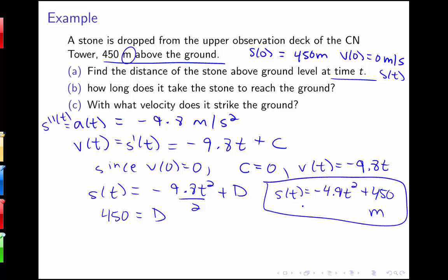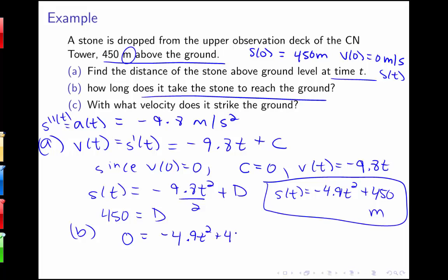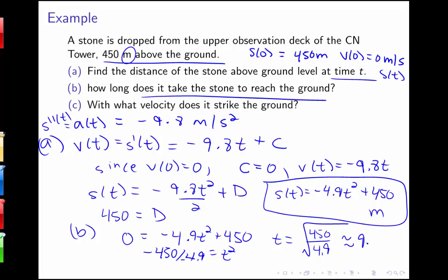This gives the distance above the ground after t seconds in meters. To find how long it takes the stone to reach the ground, we set s equal to 0: 0 equals negative 4.9t squared plus 450. Solving gives t squared equals 450 over 4.9, so t equals the square root of 450 over 4.9 — we take the positive root since we're talking about time. Using a calculator, this is about 9.583 seconds.